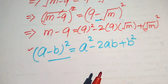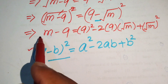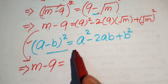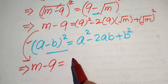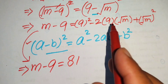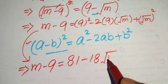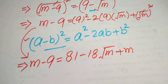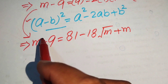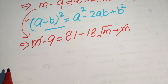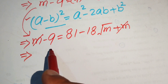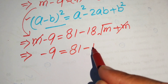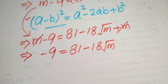Now we simplify. This step is written as: m minus 9 equals 81 minus 18 times square root of m plus m. The plus m on both sides cancels out, and the remaining terms give us minus 9 equals 81 minus 18 times square root of m.